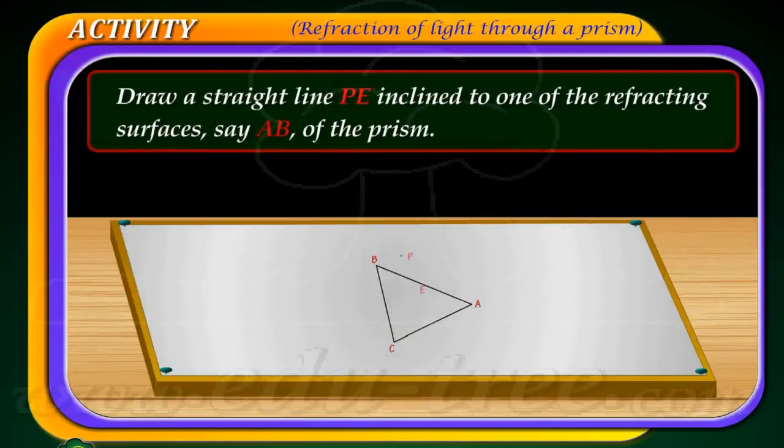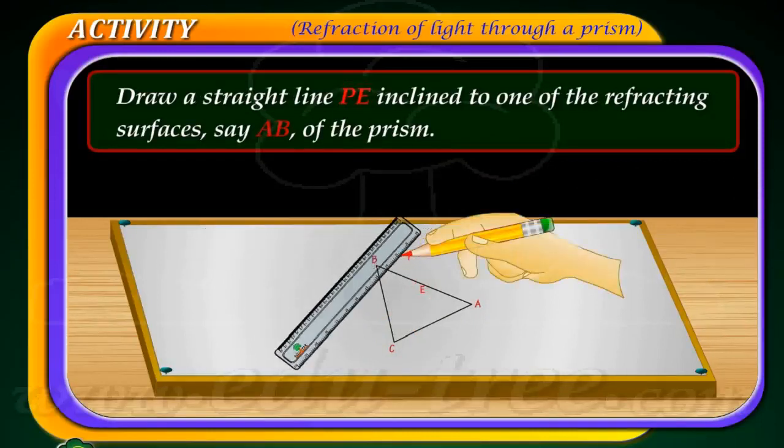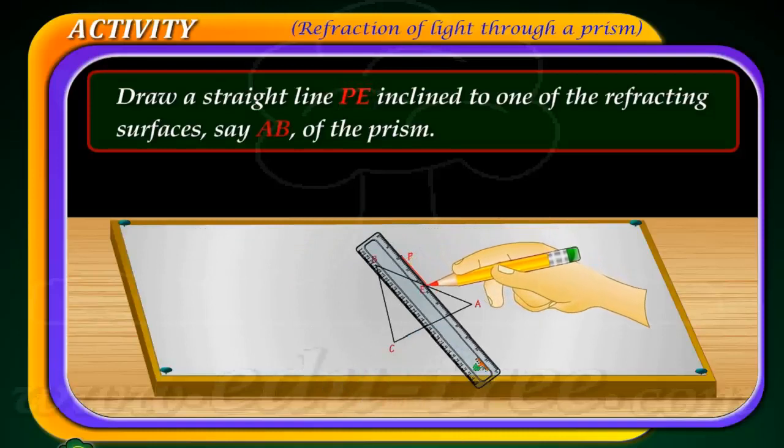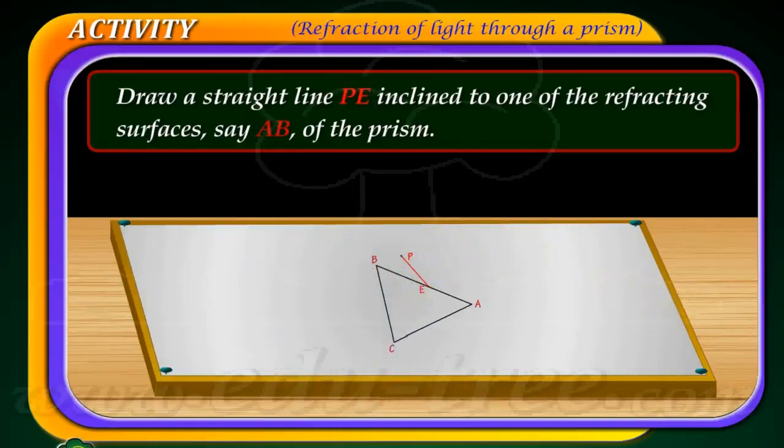Draw a straight line P E inclined to one of the refracting surfaces, say A B of the prism.